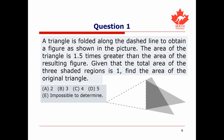We're now ready to solve our first question. We're told that a triangle is folded along the dashed line to obtain a figure as shown in the picture — a polygon with seven sides. The area of the original triangle is 1.5 times greater than the area of the resulting figure. The area of the three shaded regions, the three light gray triangles, is 1. We're asked to find the area of the original triangle.